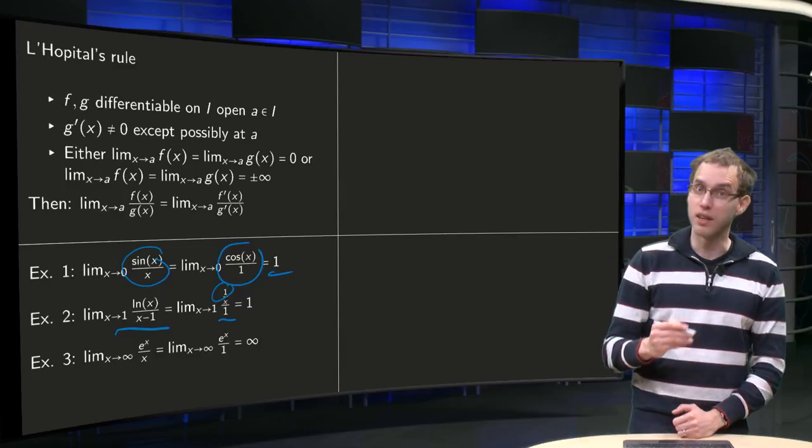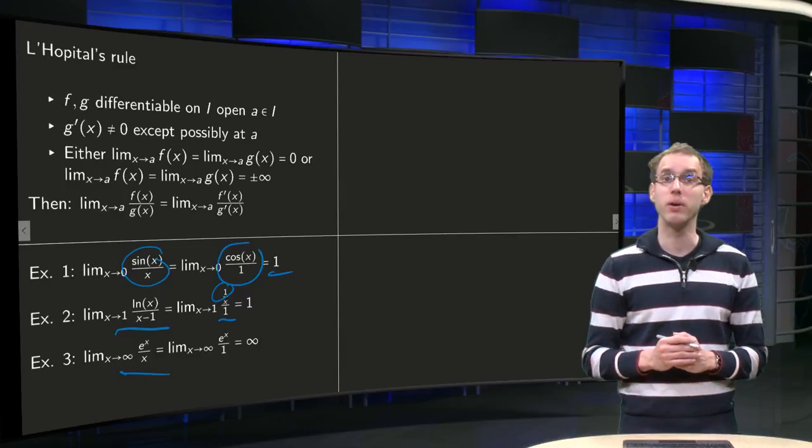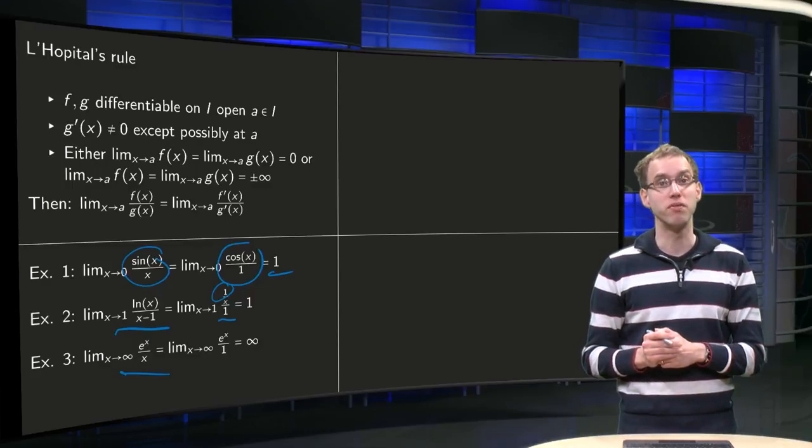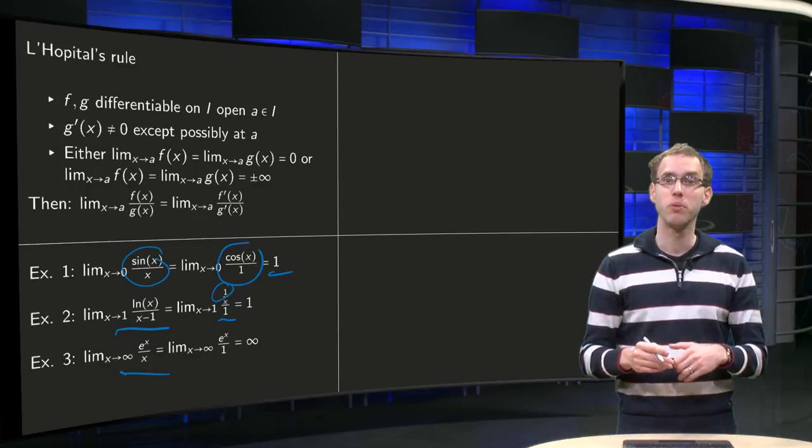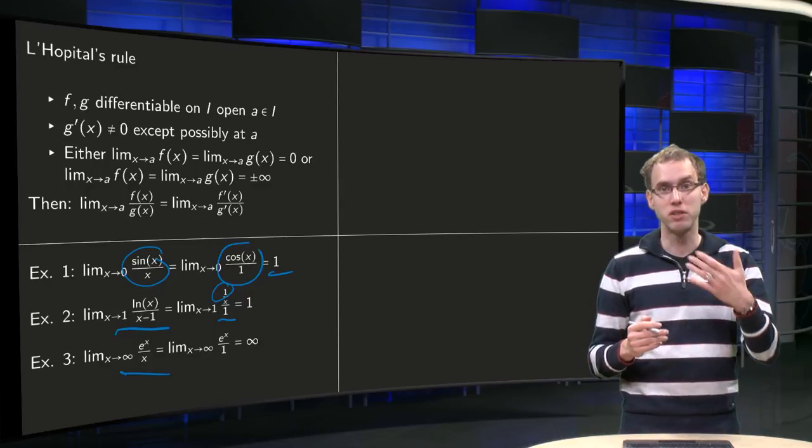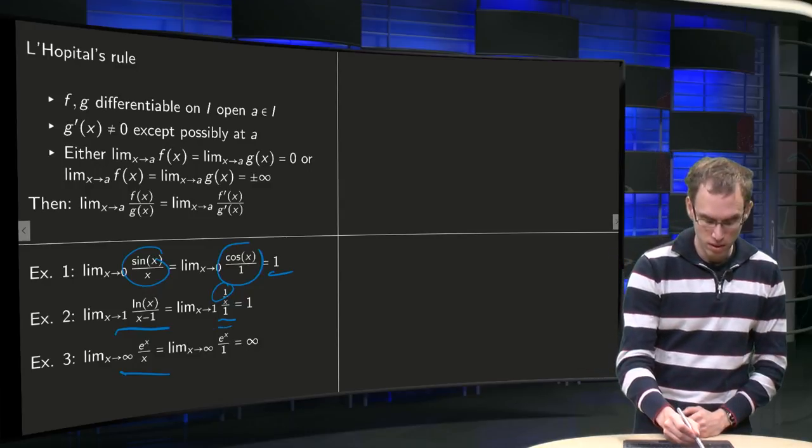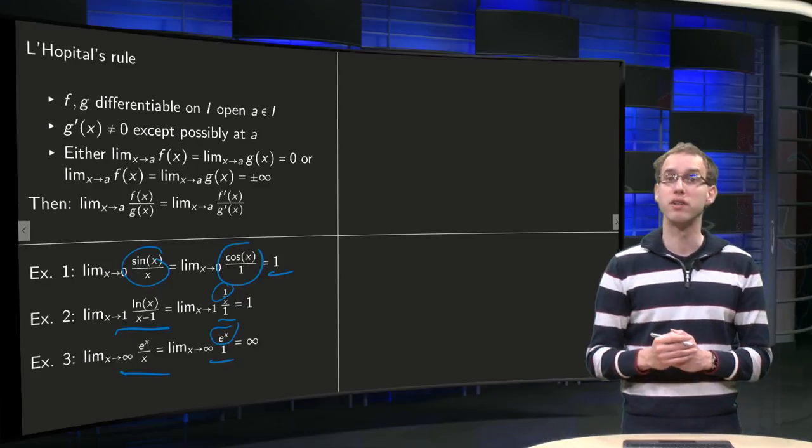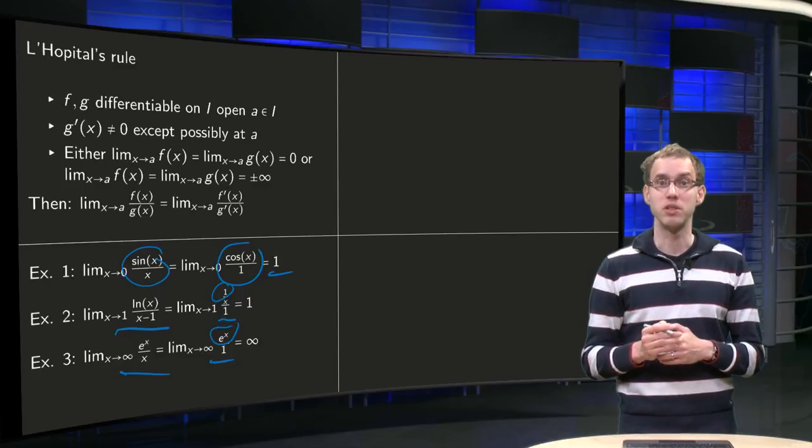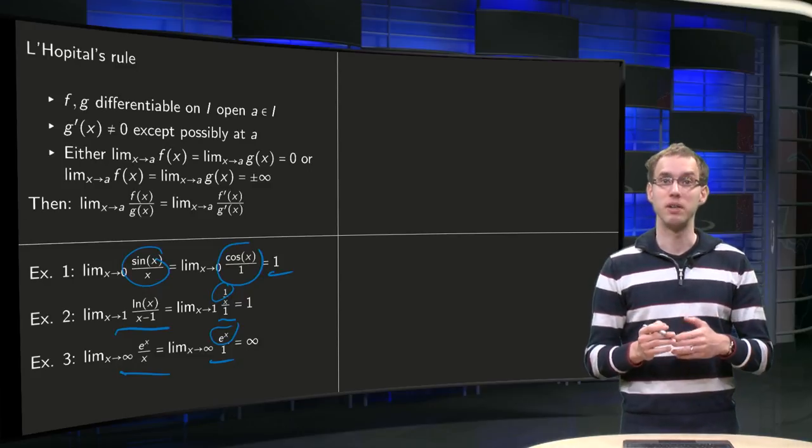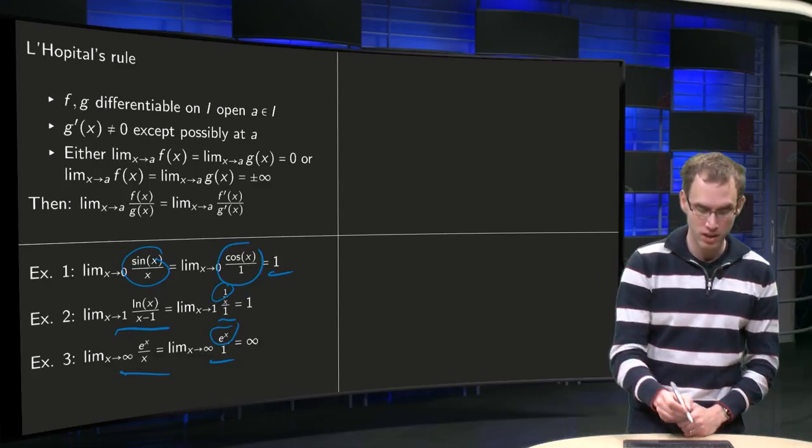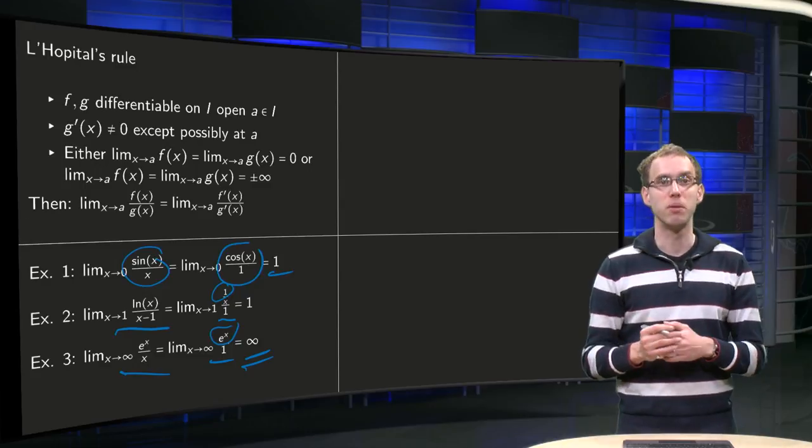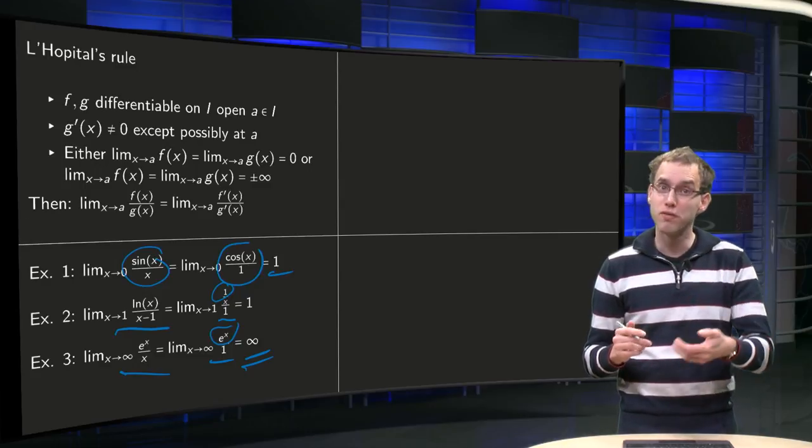And then finally in the infinity over infinity case. e to the power x over x. e to the power x blows up. x blows up if x goes to infinity. So we can apply L'Hôpital's rule. We get a new limit, limit x to infinity. The derivative of the numerator, well it stays the same. Divide by the derivative of the denominator. That becomes easier, becomes a 1. So we get limit x to infinity of e to the power x. It blows up. It goes to infinity. So here we see a few examples where L'Hôpital's rule works very fast.